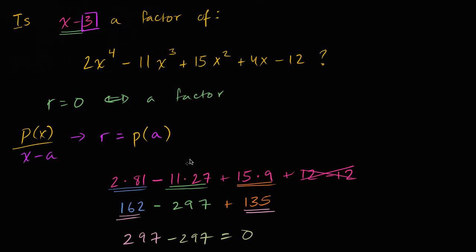So the remainder, if I were to divide this by this, is equal to zero. So x minus 3 is indeed a factor of all of this.